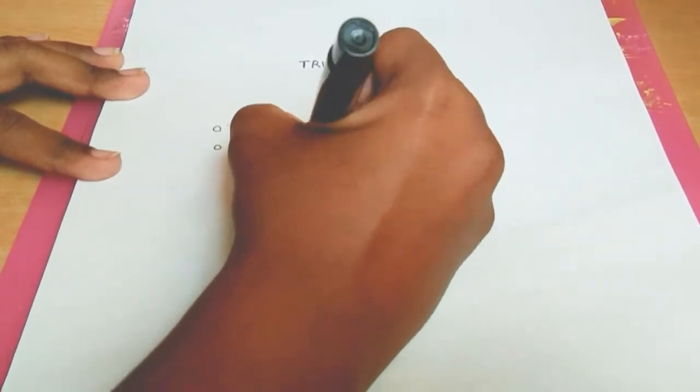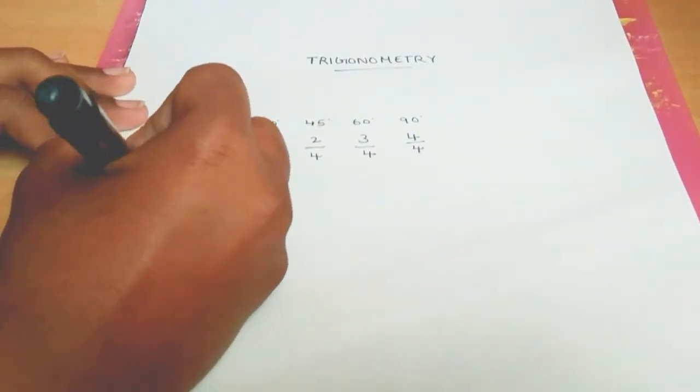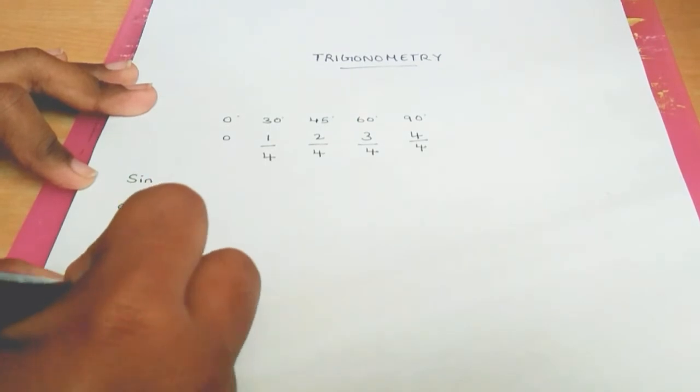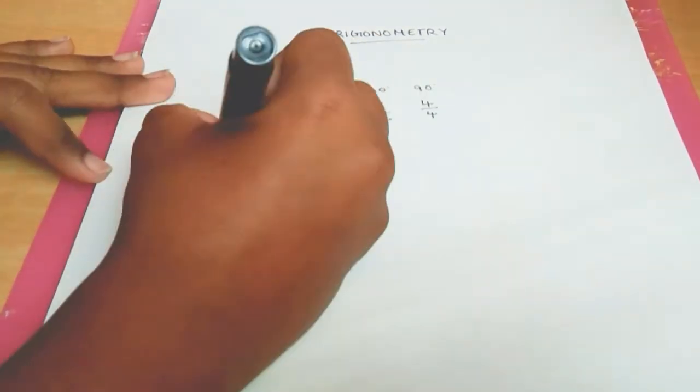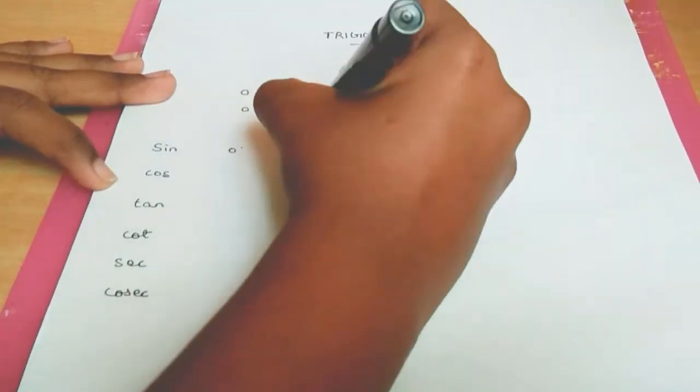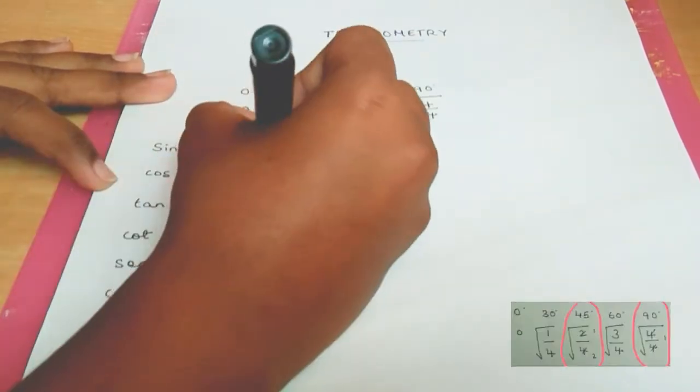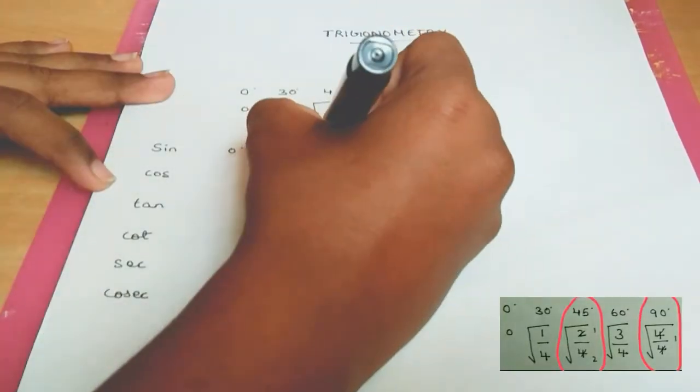After that, just write down the trigonometry ratios. Since sine of 0 is 0 itself, to find out the other values of sine, divide the numbers if possible and find the square roots.